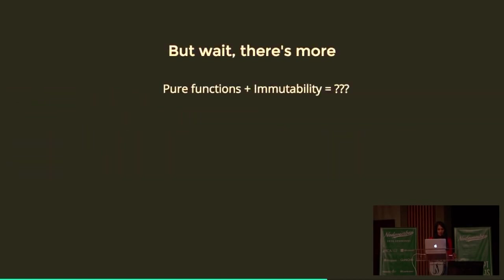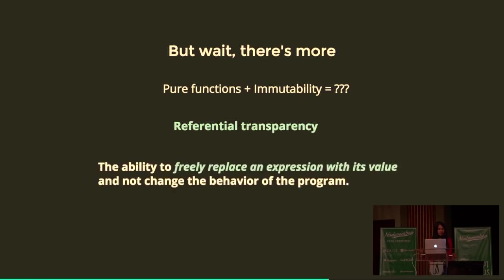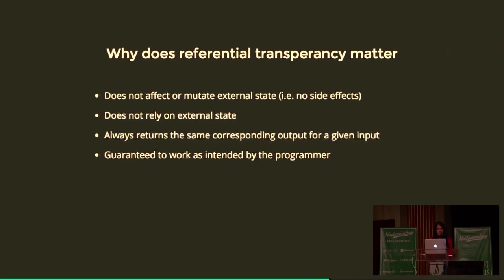When you combine pure functions and immutability, you get something called referential transparency — the ability to freely replace an expression with its value without changing the behavior of the program. Anytime you see a function, you can replace it with the return value and your program will work the same. Why does it matter? Going back to our checklist, when you have referential transparency — meaning pure functions and immutability — you get all four criteria: you don't affect or mutate external state, you don't rely on external state, you always return the same corresponding output for a given input, and it's guaranteed to work as intended by the programmer.